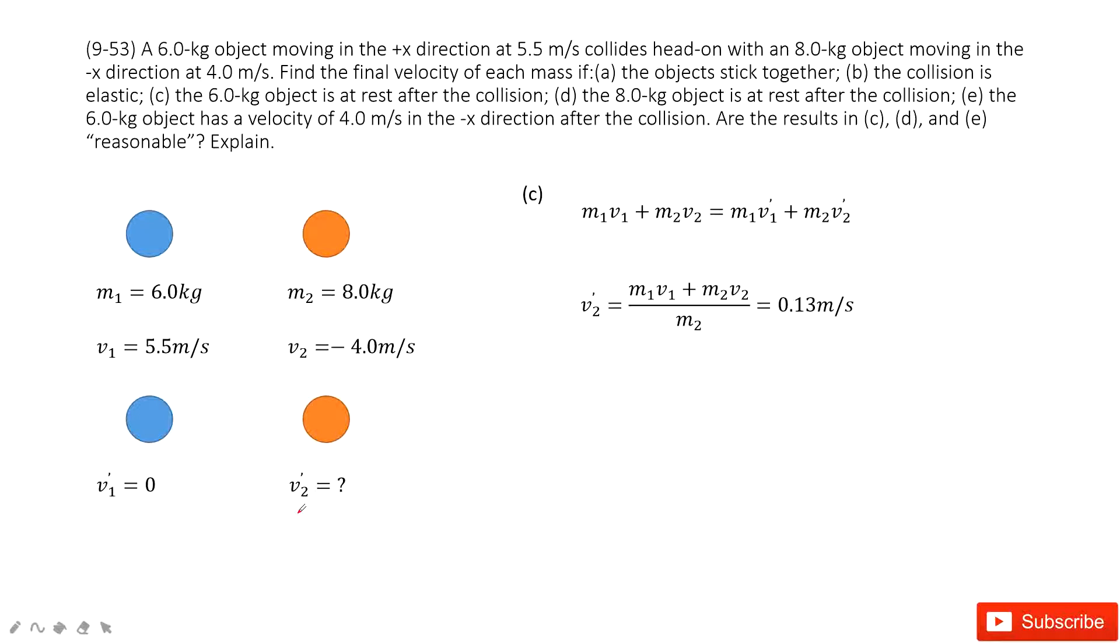because this is the collision, the linear momentum is conserved. Initial momentum equals to the final momentum. Then we input the known quantity. This is the final result for V2 prime.